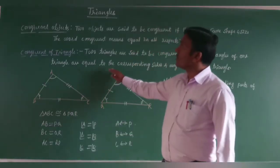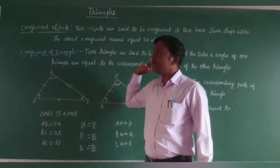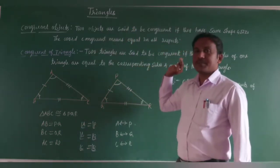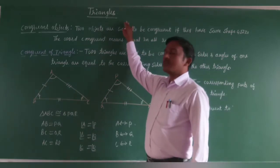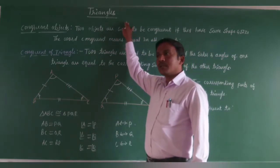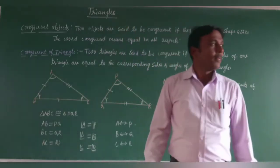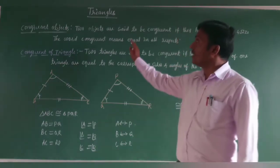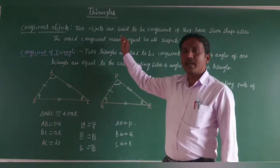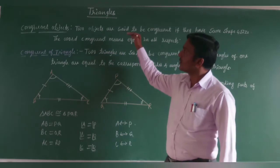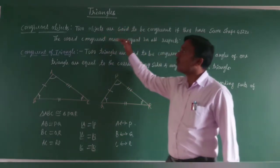Today we start one more new chapter: Triangles. We already learned related triangles. A triangle is a closed figure made up of three sides and three angles. Some properties of triangles were covered in your previous class.